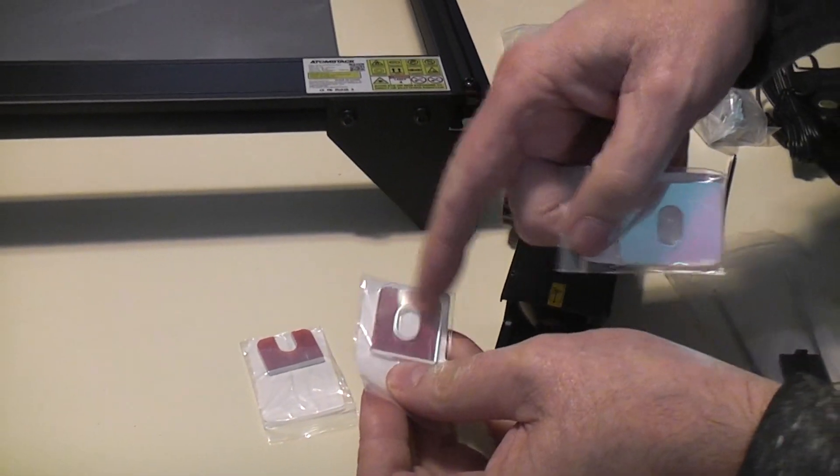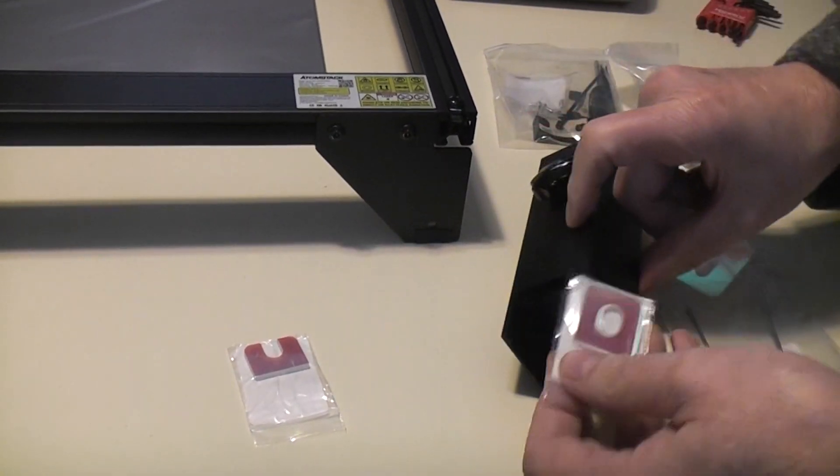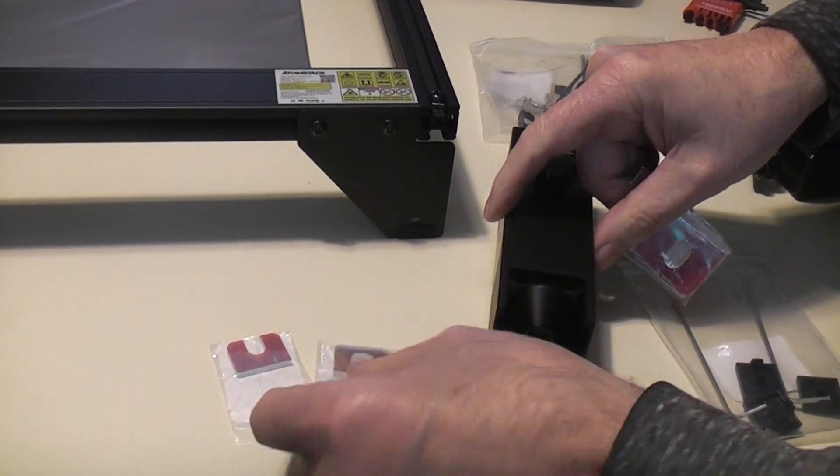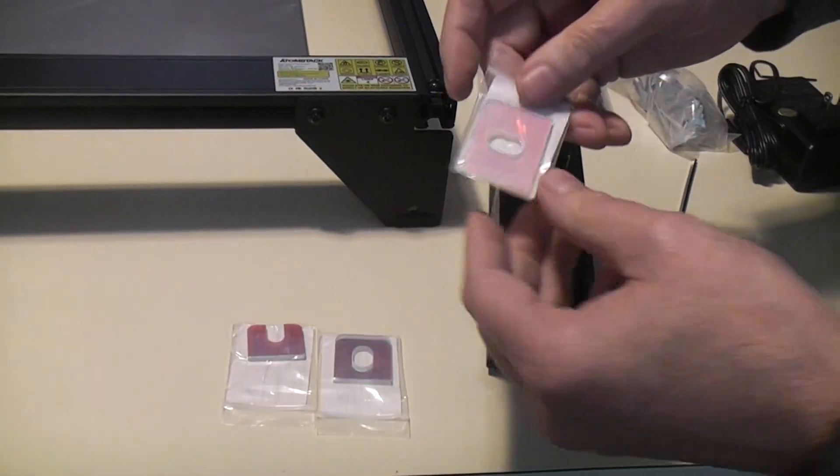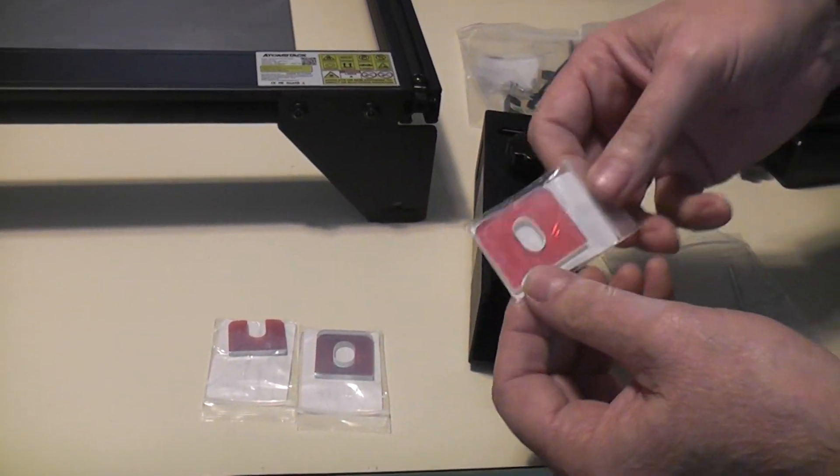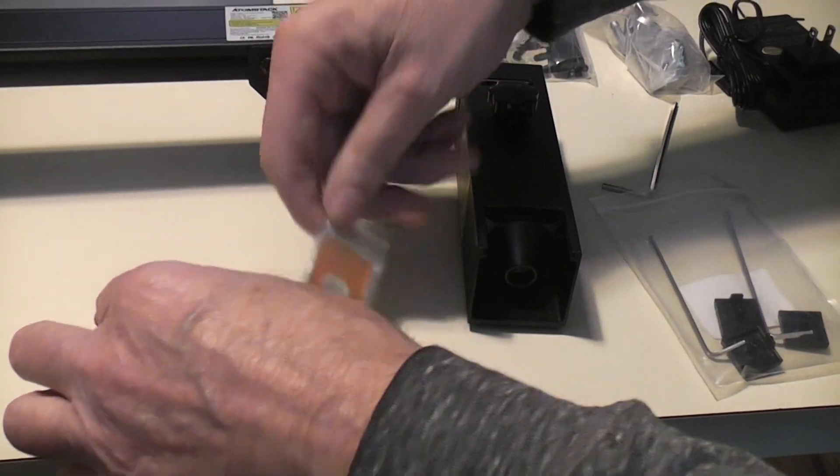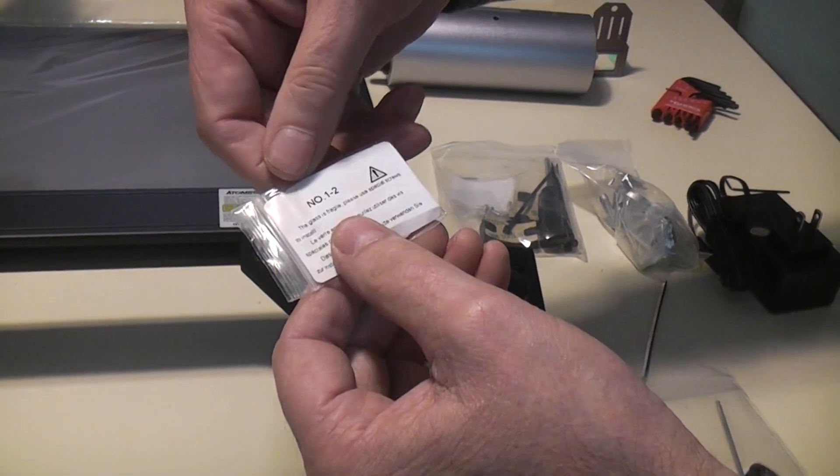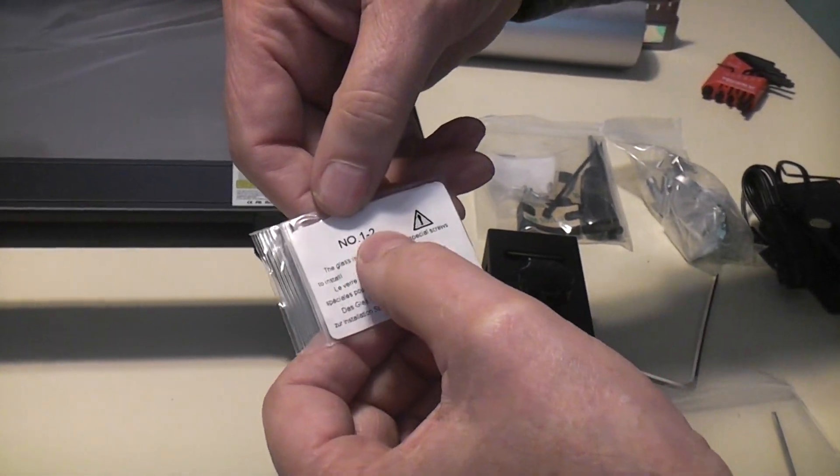Obviously that's narrower so that's not going to be for the A10 Pro and that one's narrower so that isn't. But here's a wide one so this one will be for the A10 Pro. So we know we're going to be using this one which is the number 1-2.